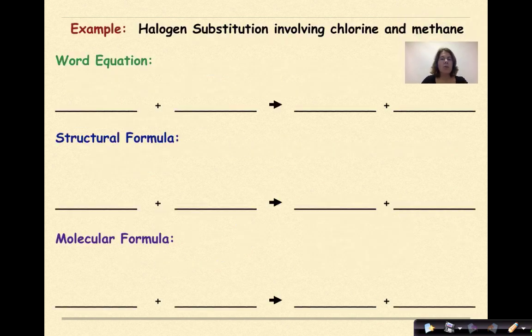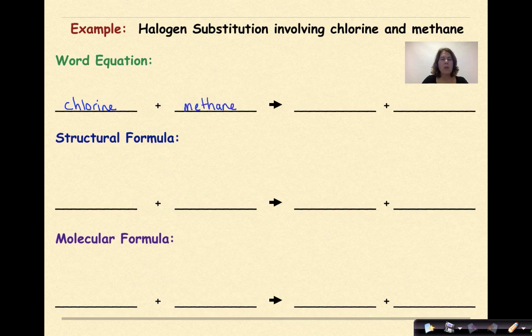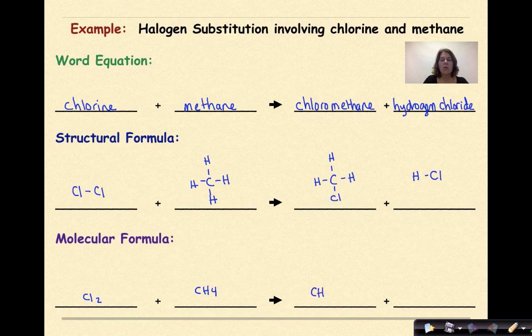Let's look at an example: halogen substitution involving chlorine and methane. In terms of a word equation, we have chlorine gas reacting with methane. As a result, we'll form chloromethane and hydrogen chloride. I do say hydrogen chloride here, as this is not assumed to be an aqueous solution. Structurally, this would be Cl bonded to another Cl. Methane is a carbon with four hydrogens. Chloromethane is a carbon with three hydrogens, where one of those hydrogens has been replaced by chlorine. At the end, we have hydrogen chloride. The molecular formula for chlorine is Cl2. Methane is CH4. Chloromethane is CH3Cl, and hydrogen chloride is HCl.